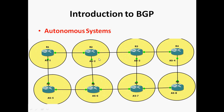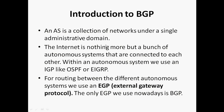Next: autonomous system. In BGP, we mainly focus on the autonomous system. An autonomous system is a collection of networks under a single administrative domain. An Interior Gateway Protocol works within an autonomous system, but BGP works between autonomous systems and within an autonomous system. The internet is nothing more than a bunch of autonomous systems connected to each other. Within an autonomous system, we use an IGP like OSPF or EIGRP. For routing between different autonomous systems, we use an Exterior Gateway Protocol. The only exterior gateway protocol we use nowadays is BGP — Border Gateway Protocol.